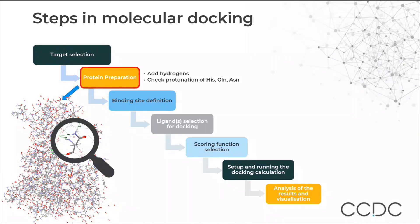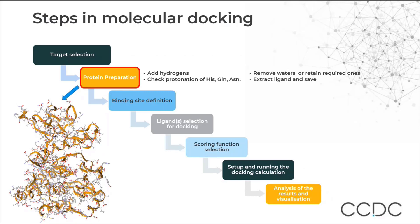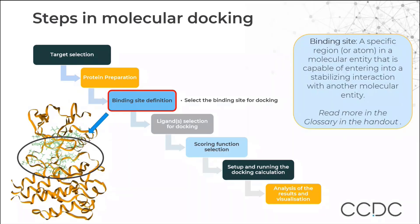The next step is preparing the protein by adding missing hydrogens, checking the protonation states for histidine, glutamine and asparagine. Then you may retain or remove the functional waters — if they are functional waters, we suggest retaining them; if they are non-functional waters or only water of crystallization, you may remove them. The next step in protein preparation is to extract the ligand and save it as a reference for future use in the same exercise. Then you define the binding site, for which various options are available.